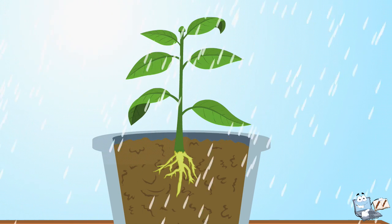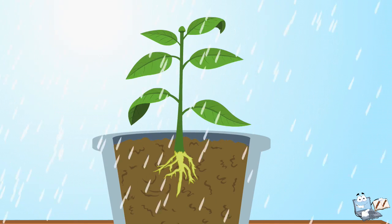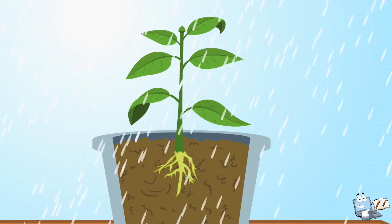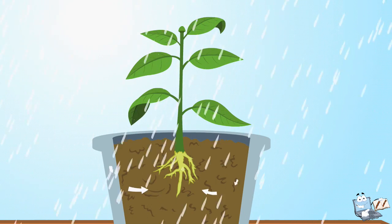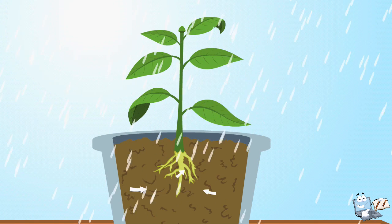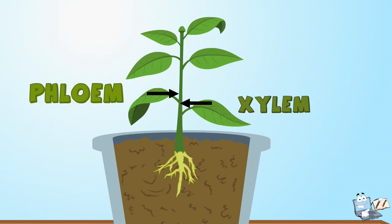Oh look! It started raining! When it rains, water gets absorbed into the soil. The plants take in the water from the soil through its roots. In the roots, there are tubes which are called the xylem and the phloem.